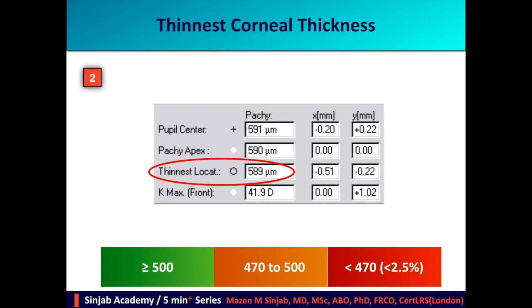The thinnest corneal thickness: the cut-off point is 500 microns. Whenever it is between 500 and 470 microns, it is considered moderate risk. And whenever it is less than 470 microns, then it is high risk, because less than 2.5% of the normal population has such thickness.